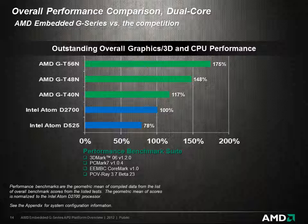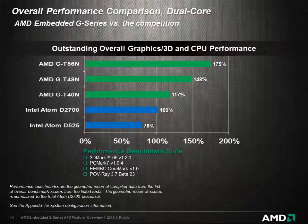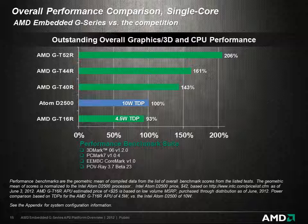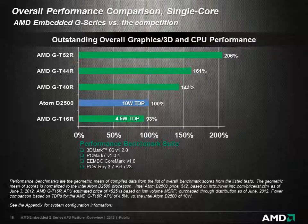For overall performance compared to the competition, even the 1 GHz dual-core AMD G-T40N APU delivers better combined performance than the 2.13 GHz Intel Atom D2700. Similarly, when comparing single-core solutions, even the 1 GHz G-T40R outperforms the 2.13 GHz D2500, and the 615 MHz G-T16R offers similar performance at a fraction of the power and cost.